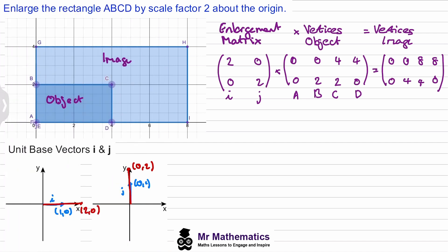This gives us coordinates (0, 0), (0, 4), (8, 4), and (8, 0). So (0, 0) is A prime, (0, 4) is G, (8, 4) is H, and (8, 0) is I. You can see this does give us the vertices of the image.